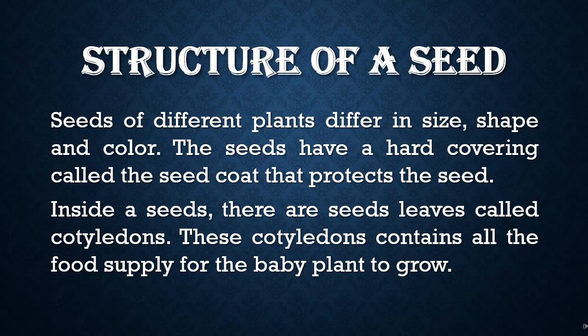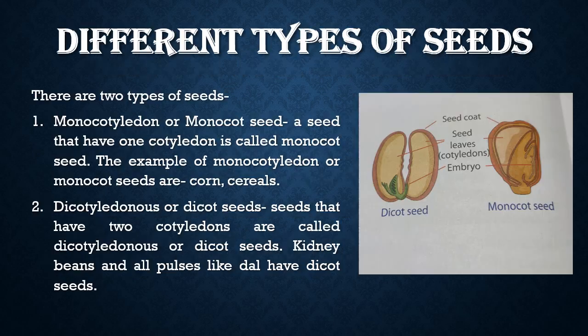The seeds have a hard covering called the seed coat that protects the seed. Inside the seed there are seed leaves called cotyledons. These cotyledons contain all the food supply for the baby plant to grow.